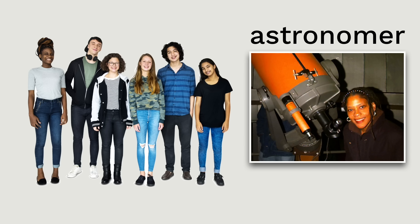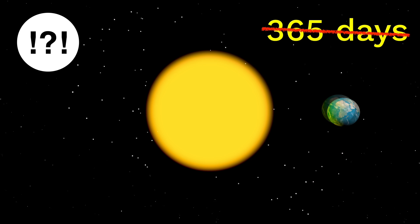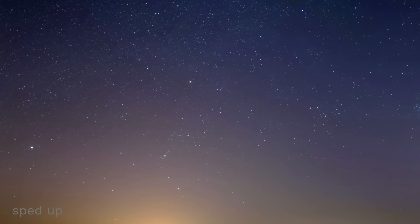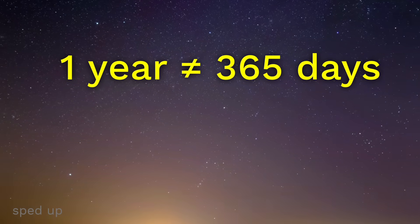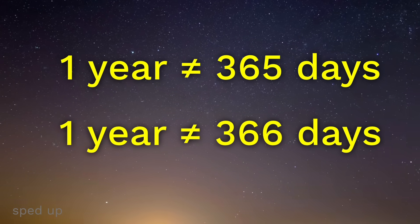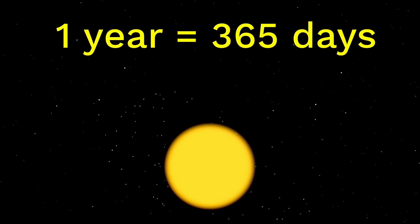You ask them, what did we screw up? They tell you: actually, we found out a long time ago that the Earth doesn't go around the sun in 365 days. It's just not exactly 365 days — 365 is just a close number. When ancient astronomers studied the sky very carefully, they were able to figure out that one year isn't quite 365 days, and it's not 366 days either. It's somewhere in between. In fact, it's about 365 days plus six hours.